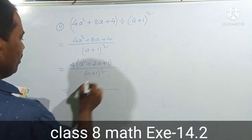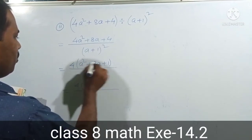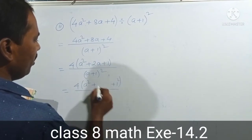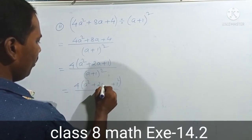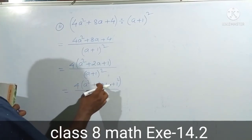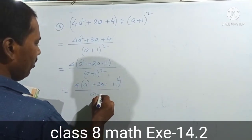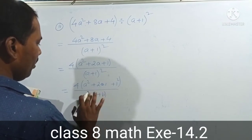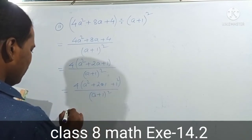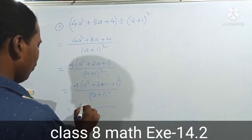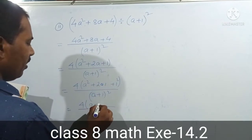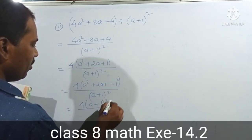Using the formula: a squared plus 2ab plus b squared, divided by a plus b. With a plus 1 whole square, we have a squared plus 2ab plus b squared, meaning b equals 1, so a plus 1 whole square.